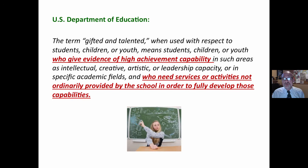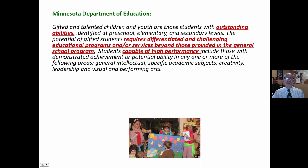Let's look at three specific definitions. The U.S. Department of Education — you can read that to yourself — identifies students who give evidence of high achievement capability, and whose needs require services or activities not ordinarily provided by the school in order to fully develop those capabilities. Notice the areas: intellectual, creative, artistic, leadership capacity, or specific academic fields — those five areas.